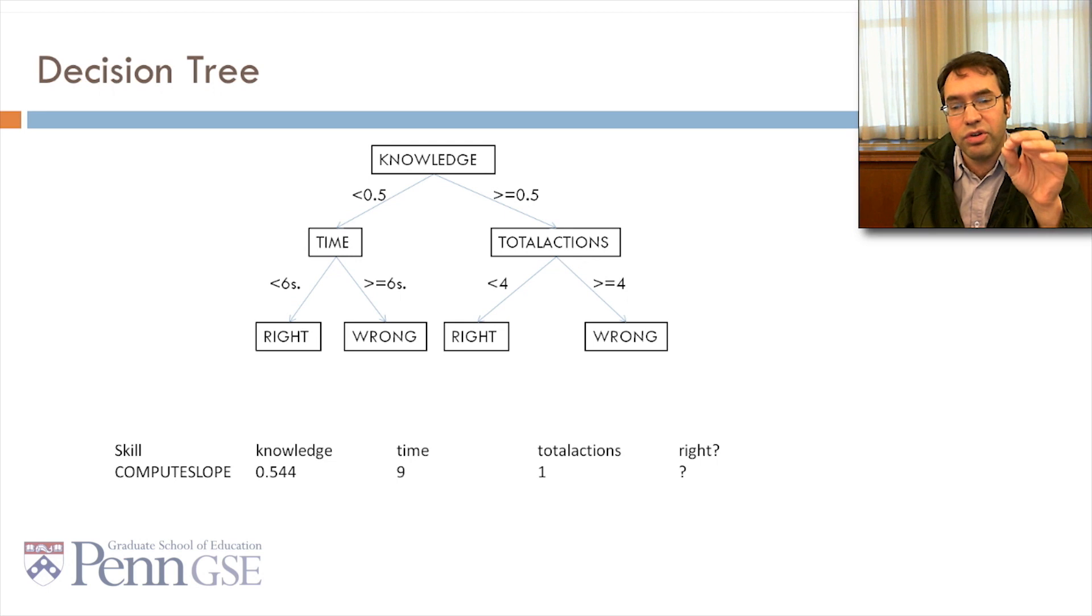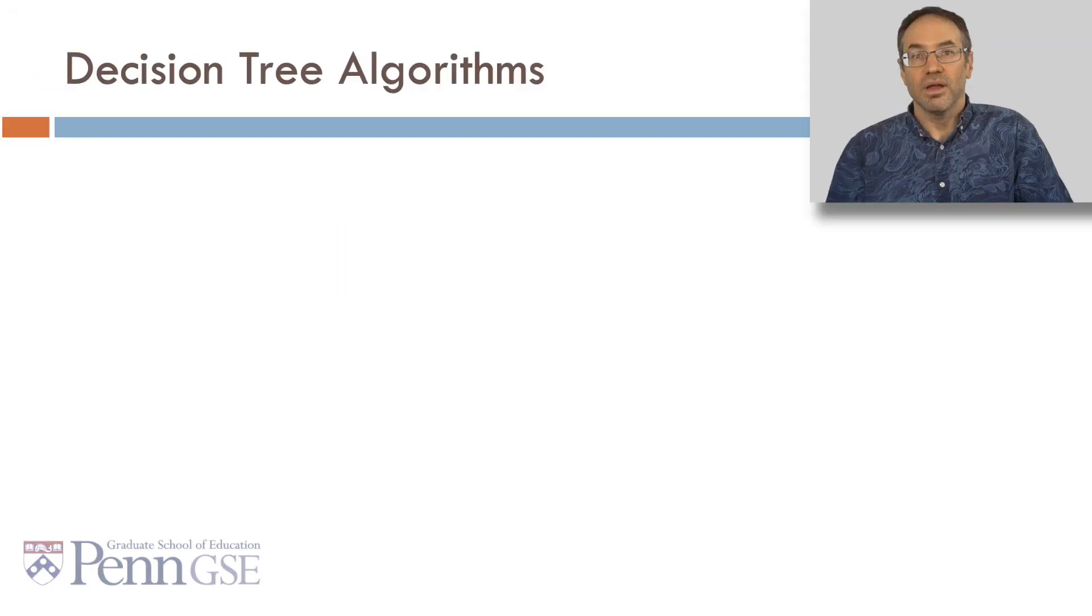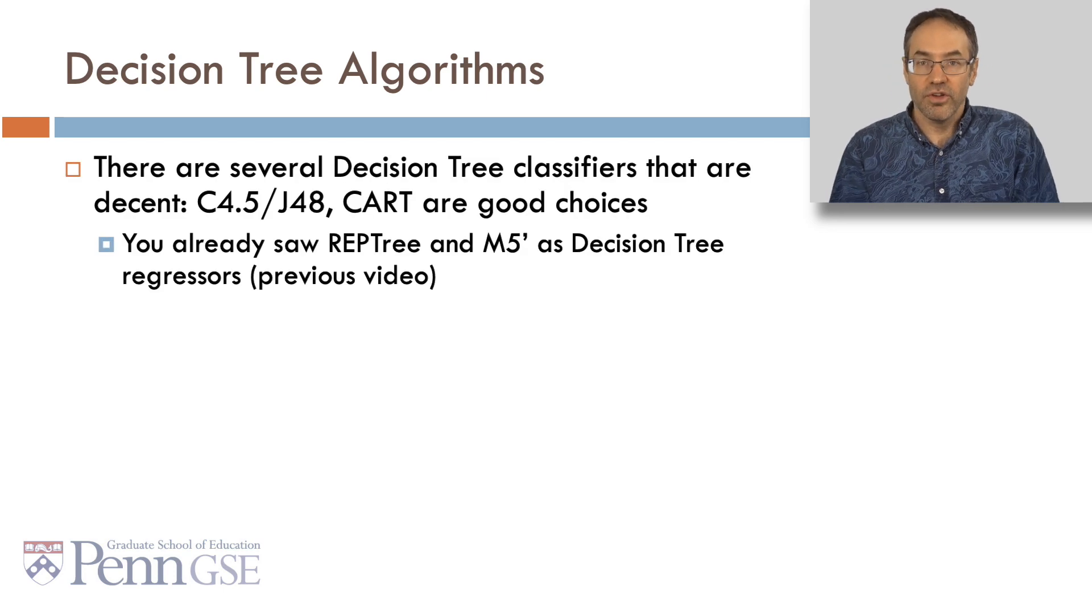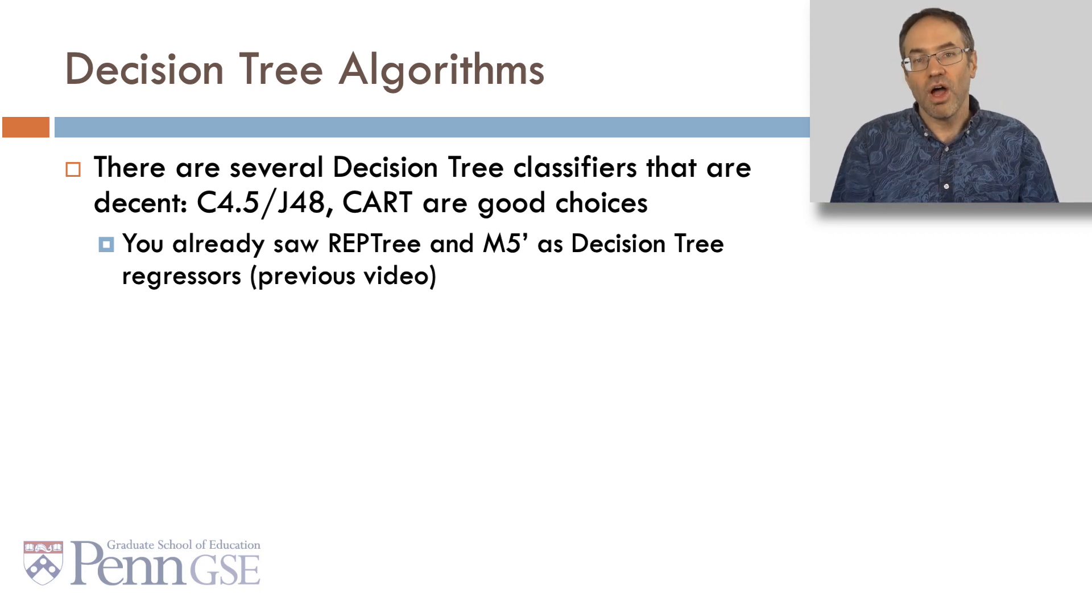So, if we have a student with knowledge of 0.544, we're going to go down the right side with total actions. Total actions is 1, so it's less than 4, so the student is right. Now, in terms of actually fitting a decision tree, there are several decision tree classifiers that are decent. C4.5, also sometimes called J48, and CART are good choices. You already saw REP tree and M5' as decision tree regressors in the previous video.